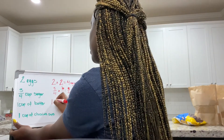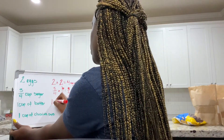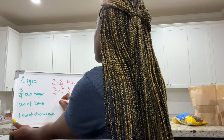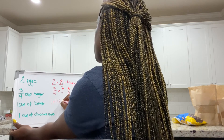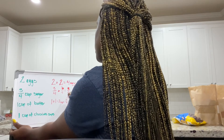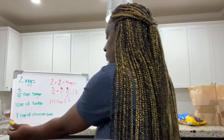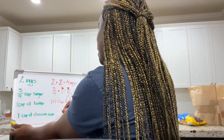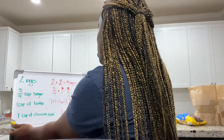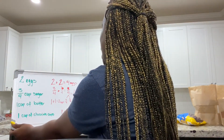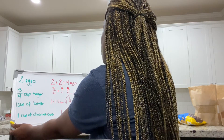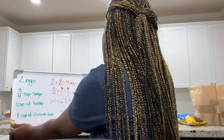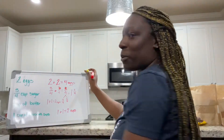I have one cup of butter for 30 — add another cup, and that gives me two cups of butter. And last but not least, the best part: one cup of chocolate chips — add another, and that gives me two cups of chocolate chips. Excuse me, not cookies — because that's what we're making!